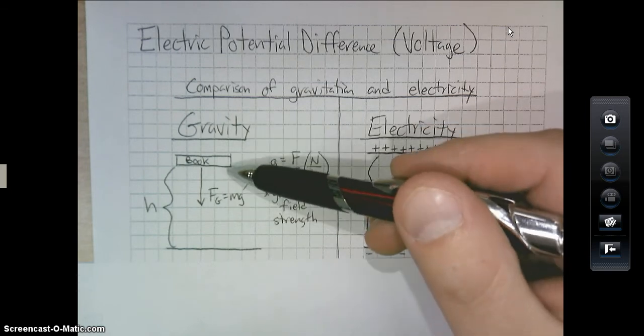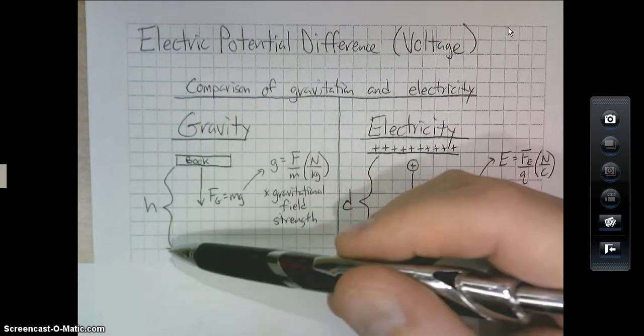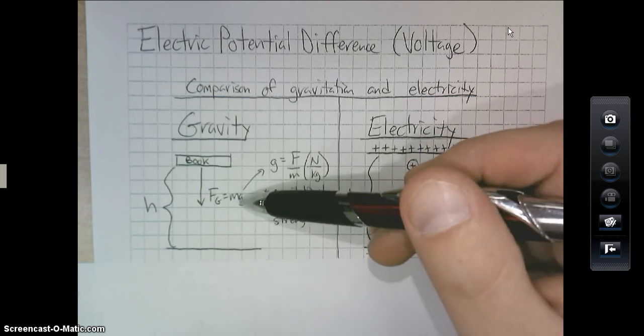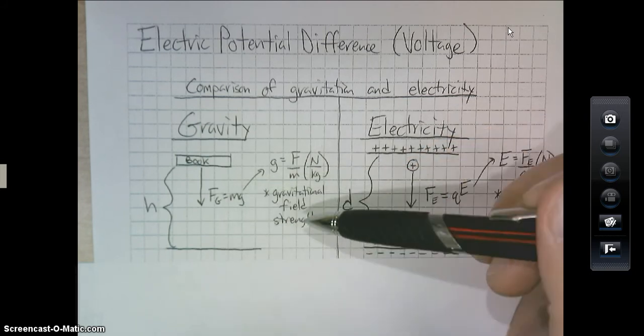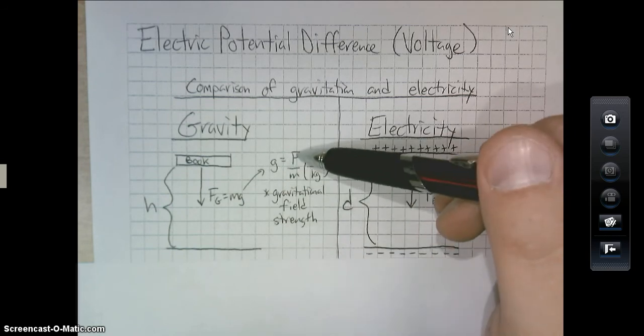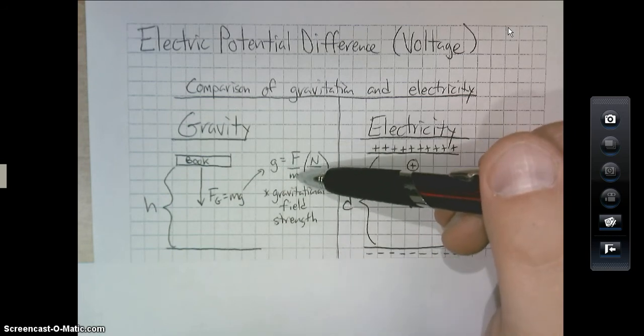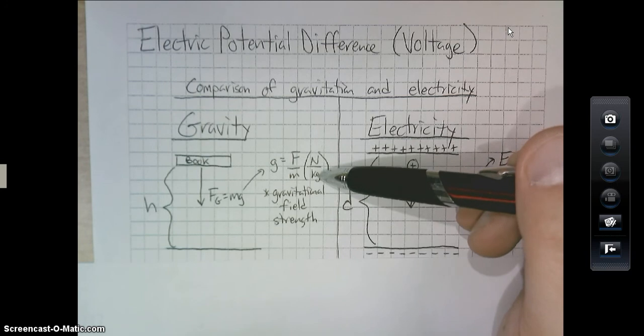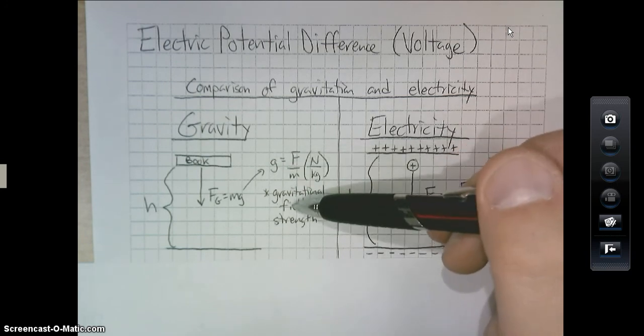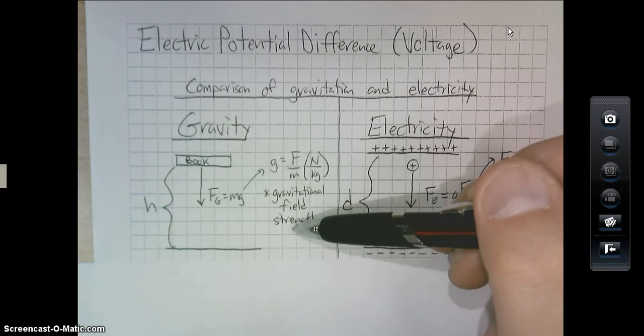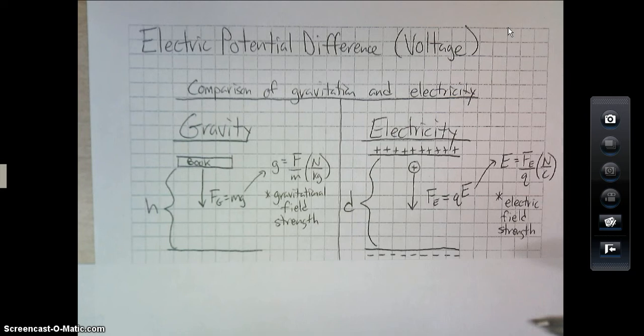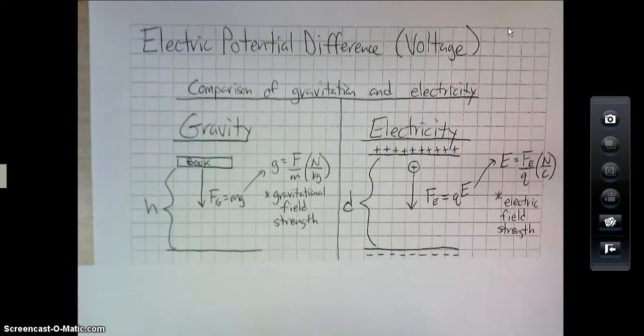If we have a book at a given height, the force that brings that book down is the force of gravity, which is M times G. If we rearrange this particular equation for G, it would be the force per unit mass, or newtons per kilogram. And we've defined that value G as the gravitational field strength. Now, this is pretty easy to understand, I think, for the most part. So let's take a look at electricity for a second.